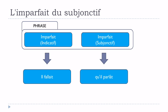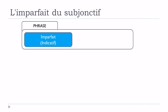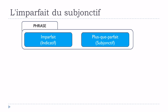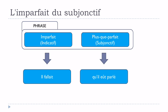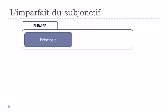For example: 'il fallait qu'il parlât.' Here, 'il fallait' is l'imparfait de l'indicatif, and in the subordonnée 'qu'il parlât' is l'imparfait du subjonctif. Alternatively, with le plus-que-parfait du subjonctif in the subordonnée, we get: 'il fallait qu'il eût parlé.' So the same imparfait de l'indicatif in the principale, and 'qu'il eût parlé' is le plus-que-parfait du subjonctif.